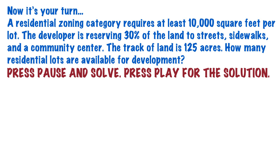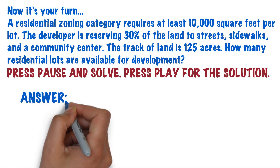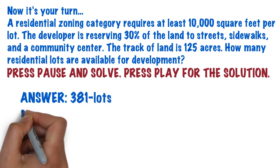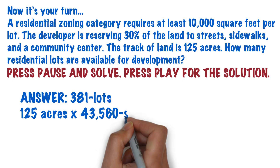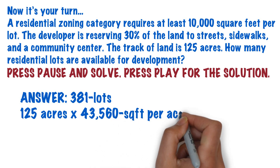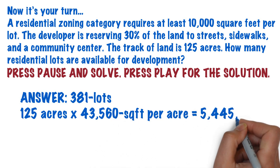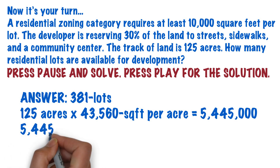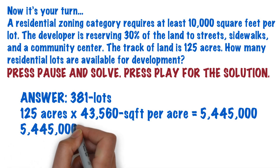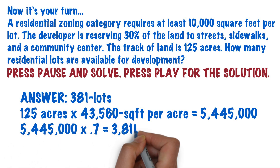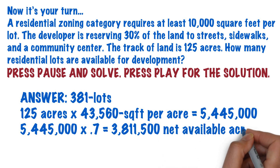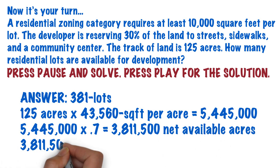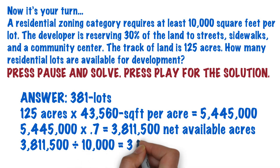Welcome back! Did you get 381 lots? That's the answer. Here's how you get there: 125 acres times 43,560 square feet per acre gives us 5,445,000 square feet. Multiply that by 0.7 — since 70 percent is available for development — giving us 3,811,500 square feet. Then divide that by the lot size of 10,000 to get 381 lots.